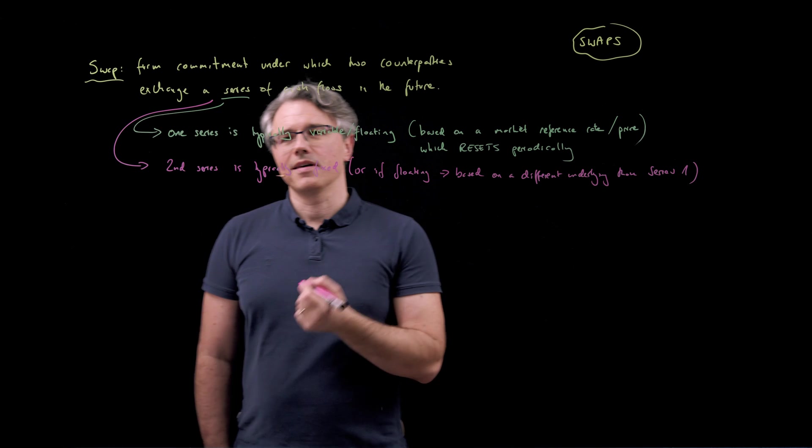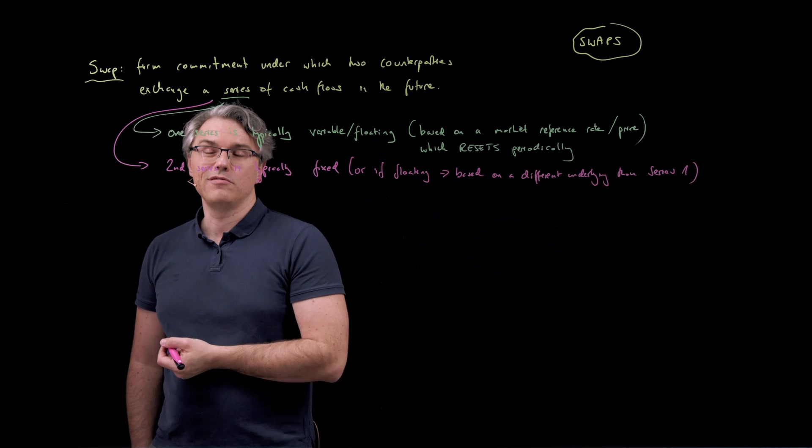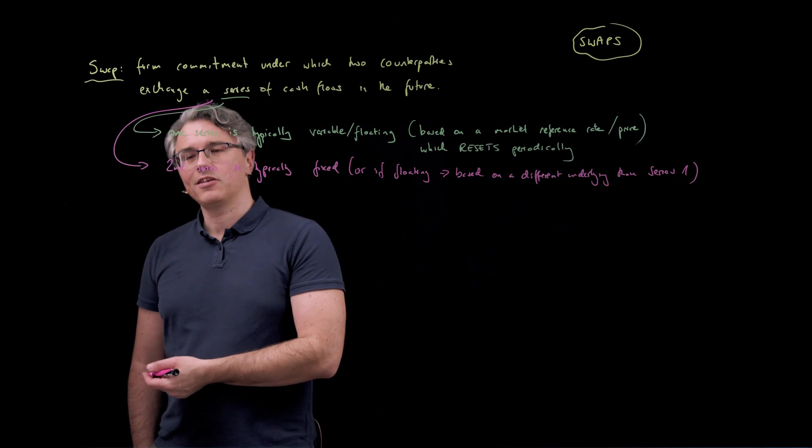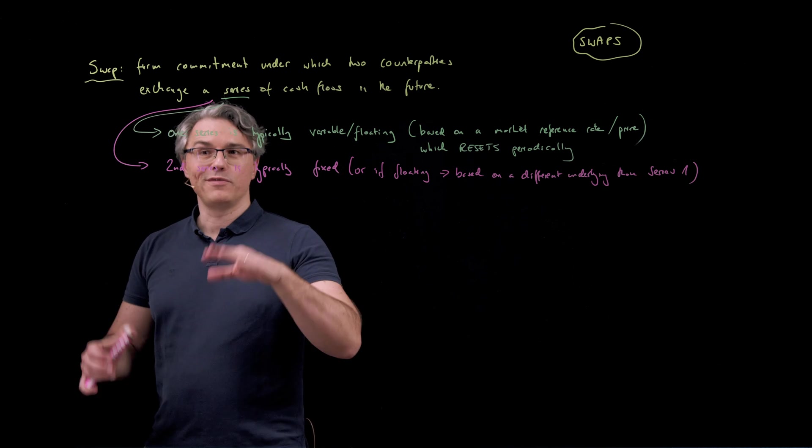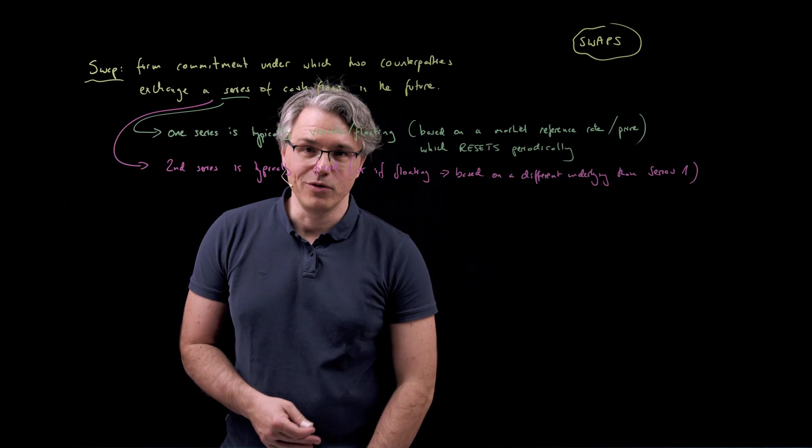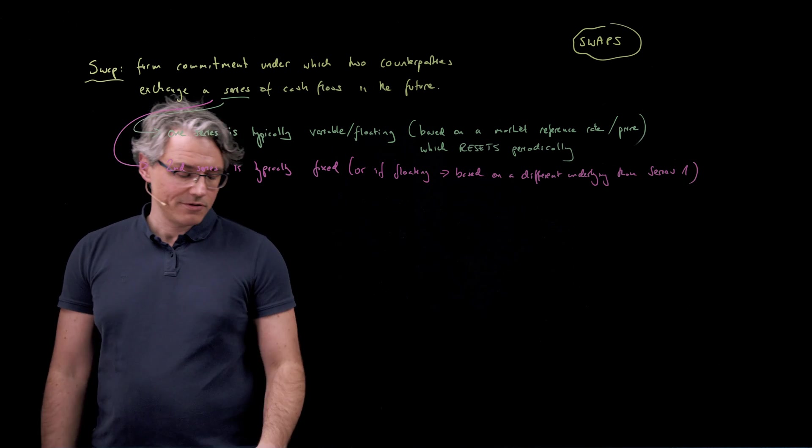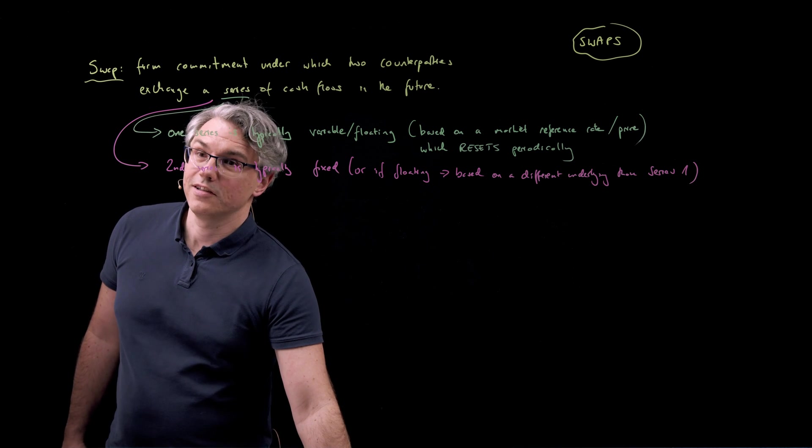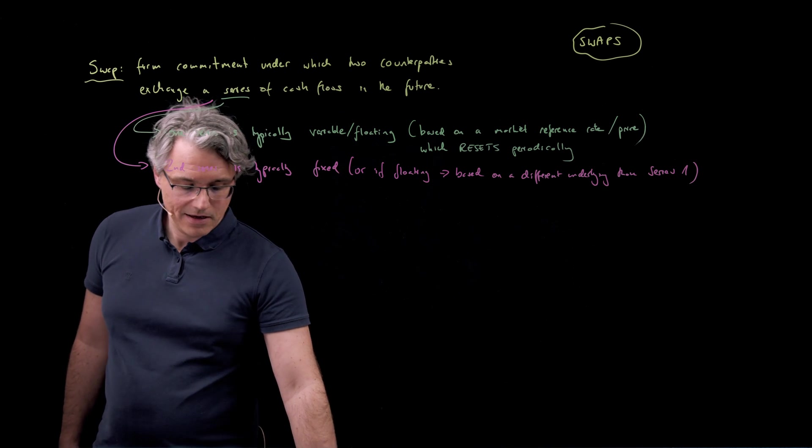So I may pay you cash flows based on the price of a certain commodity like crude oil, and you pay me cash flows based on the price of natural gas. And obviously both will be floating because we will be checking what the price of each commodity is in the market and adjust the payments accordingly, but it's not floating for fixed or fixed for floating, it's floating for floating but based on different underlyings.